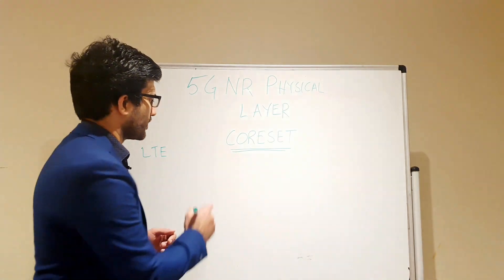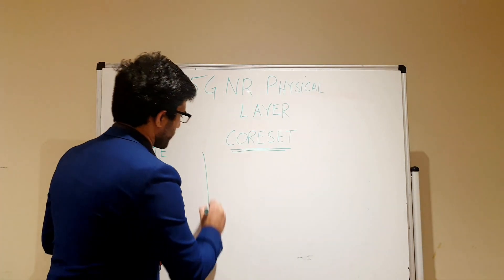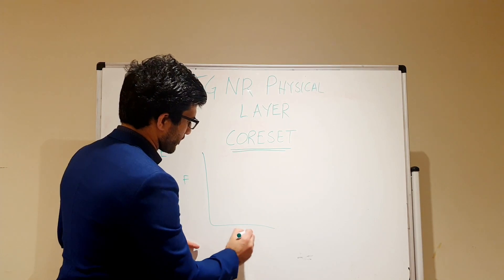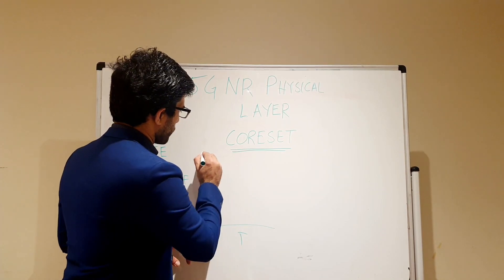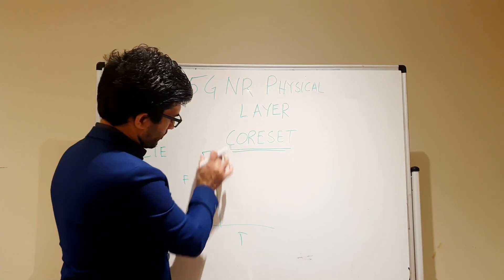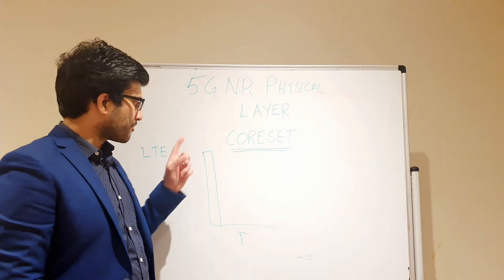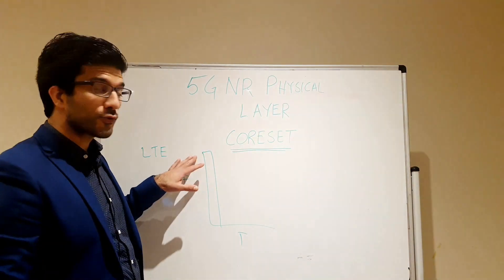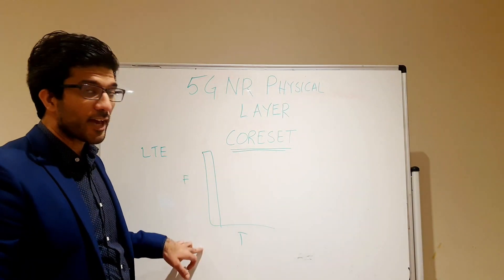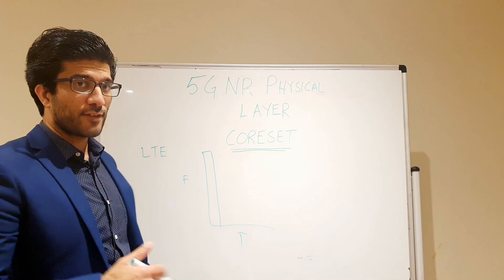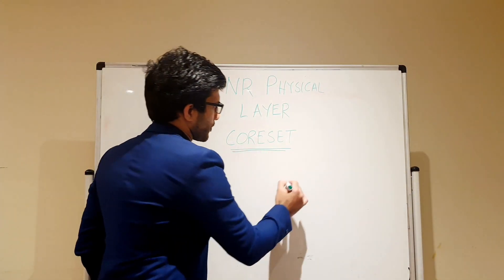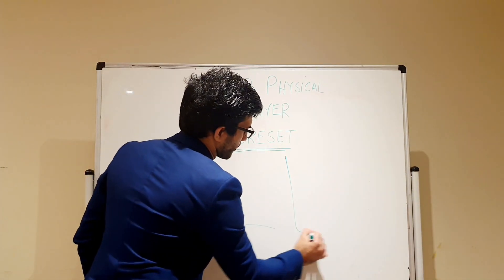So if this is your frequency axis and this is your time axis, your control channels will occupy the entire bandwidth. If you compare it with 5G using the concept of CORESET, what will happen is different.